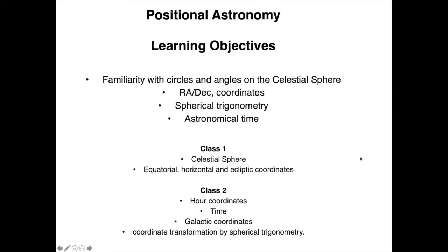Hello Astro people! Welcome to class 2 of this course. On class 1 we learned about right ascension and declination. These are the equatorial coordinates. We learned about horizontal and ecliptic coordinates that are defined on the celestial sphere.